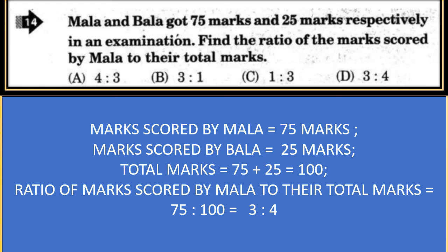Mala and Bala got 75 marks and 25 marks respectively in an examination. Find the ratio of marks scored by Mala to their total marks. Marks scored by Mala = 75, Bala = 25, total = 100. Ratio of Mala's marks to total = 75 : 100 = 3 : 4. The correct option is D.